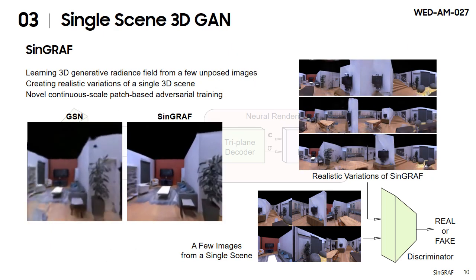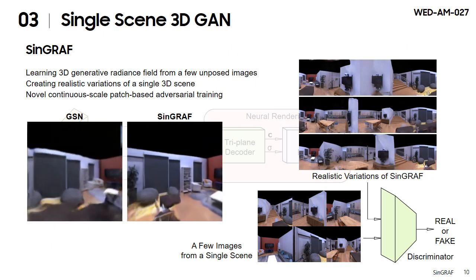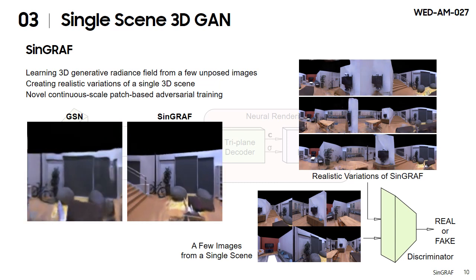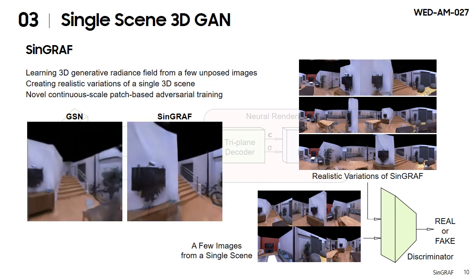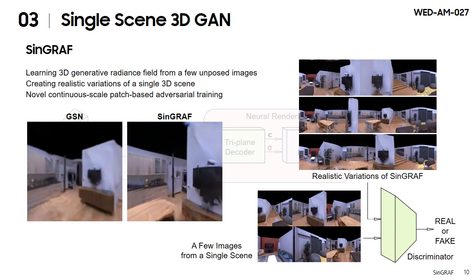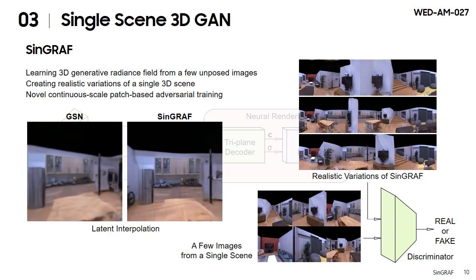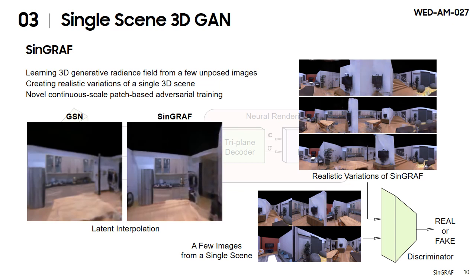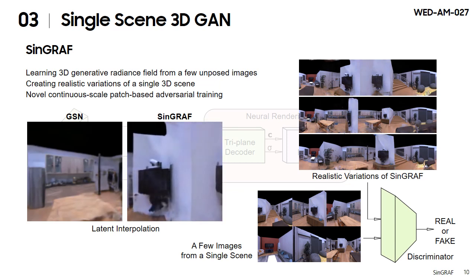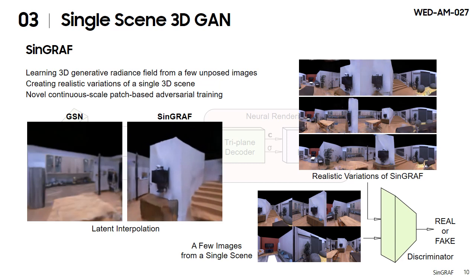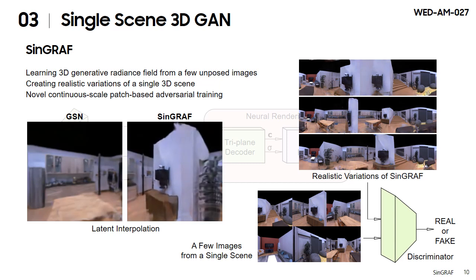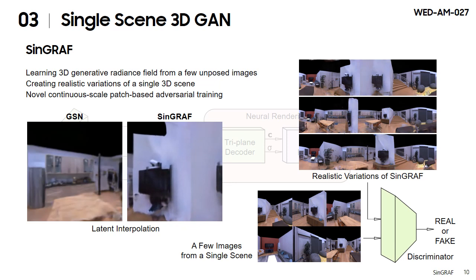To solve this problem, we propose Scene Graph, the first single-scene 3D GAN, training a 3D generative radiance field from a few images of a single scene. Scene Graph can create different realizations of this 3D scene with varying layout that preserve the appearance of the input, based on our novel continuous-scale patch-based adversarial training.